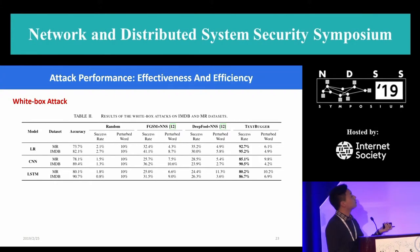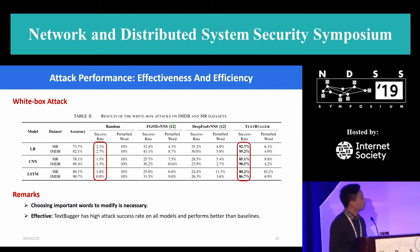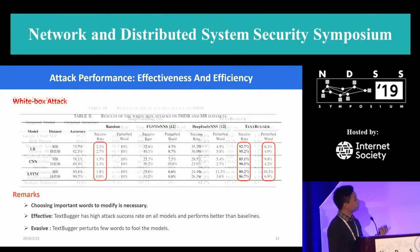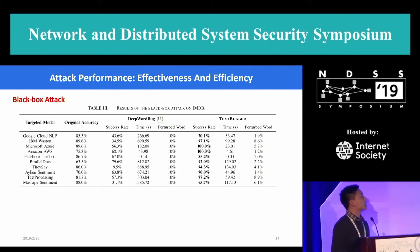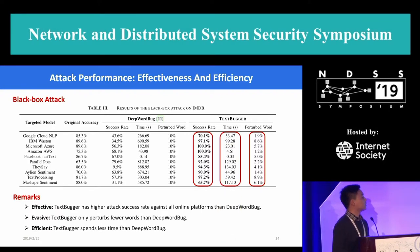Then we show the quantitative evaluation results on attack performance. Table two summarizes the evaluation results on the white box setting. We can see that choosing important words to modify is necessary because random perturbation almost has no influence on the final results. TextBugger has a high attack success rate on all models and outperforms the baselines. The table three shows the evaluation results under black box settings. TextBugger has a high attack success rate against all online platforms with fewer words perturbed, and is more efficient.